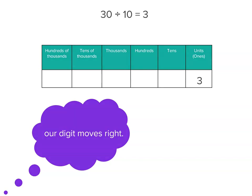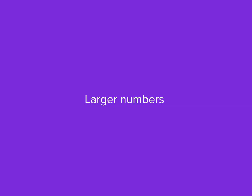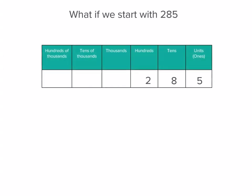It doesn't just work for those numbers either. We can use a larger number or mixed numbers like this one. If we have 285 and we want to multiply that by 10,